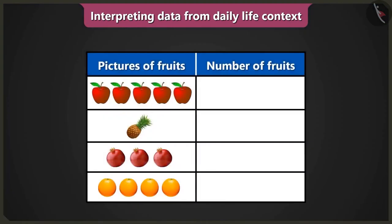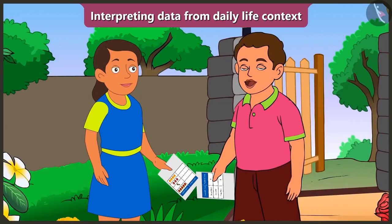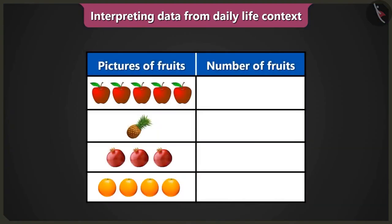Hey, there are only pictures of fruits in this table. The number of fruits are not written. So what will you do now? I will go to the kitchen and count the number of fruits and come back. Hey, stop. You do not have to go anywhere. All the data has been shown in this table.